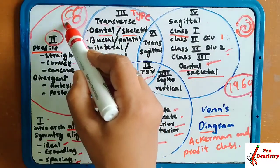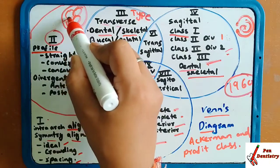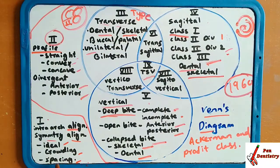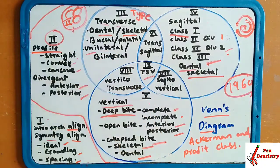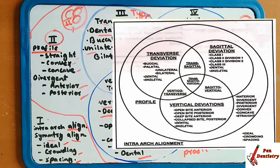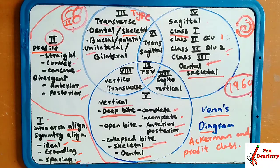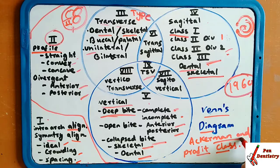The profile comes second, and the first — alignment — will be present outside the circle. This is the instrument, or you can say the diagram designed by Ackerman and Proffit, to differentiate between many of the problems and limitations which were present in the Angle classification. To overcome those limitations, they made the Venn diagram so that it makes it easy to understand.